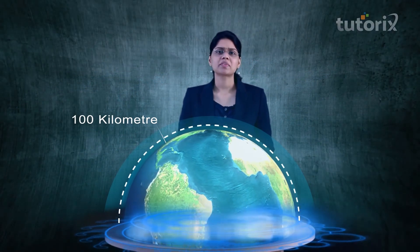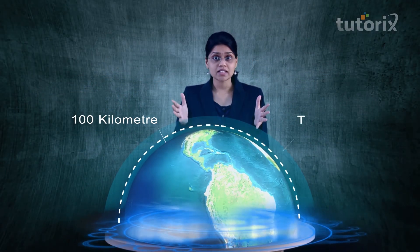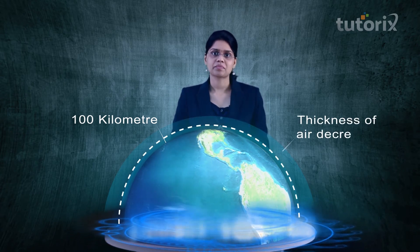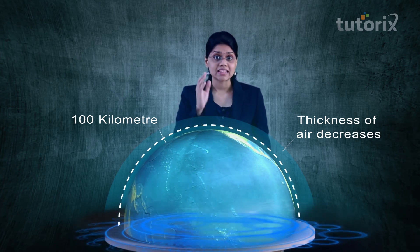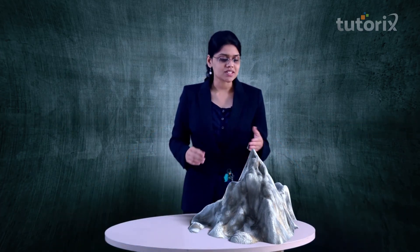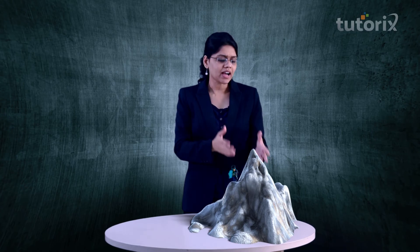Now, the layer of air that surrounds the earth is called atmosphere. Atmosphere is what helps sustain life on our planet. But this atmosphere does not extend all the way into outer space. It extends only up to 100 km above the earth's surface. However, as you move away from the earth's surface, the thickness of air decreases. Which means oxygen in our atmosphere also decreases. This is why mountaineers carry oxygen cylinders when they climb up high mountains.